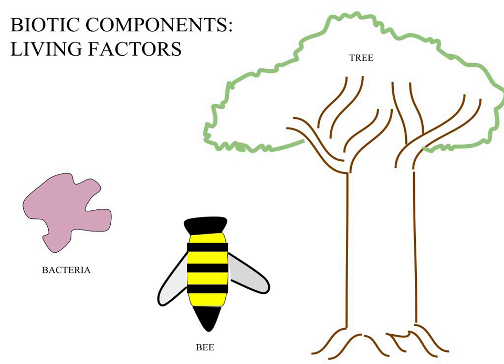When disease outbreaks occur, it can be detrimental to an ecosystem. When a disease hits, it will usually affect more than one species, thus causing a serious outbreak. This has the potential to set off a chain reaction, causing endangerment to a variety of species within that ecosystem.